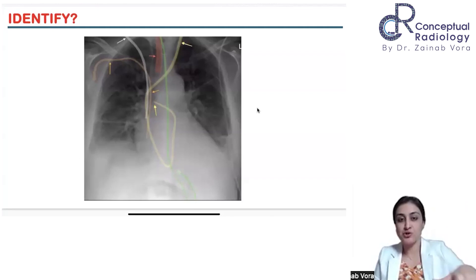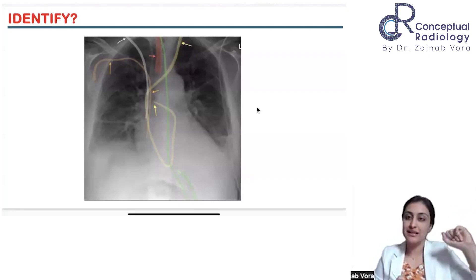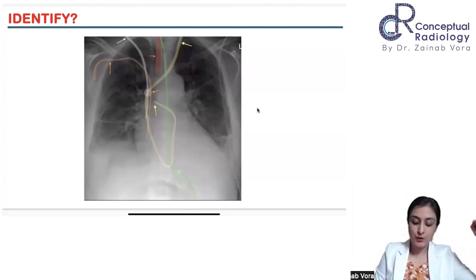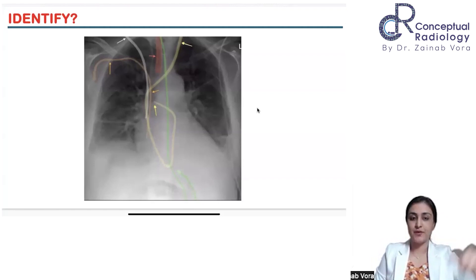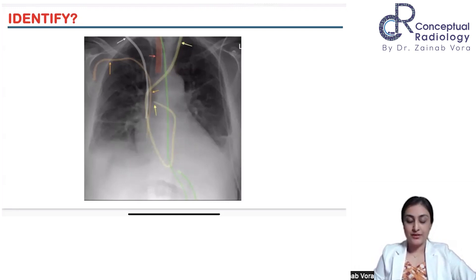The green tube is the NG tube. When we talk about the NG tube, we want at least 10 centimeters of the tube coiled inside the stomach so that it is not pulled out. So the key word for NG tube is 10 centimeters of coiling inside the stomach for it to be adequate. Now, what is the yellow line? This is not a central line.